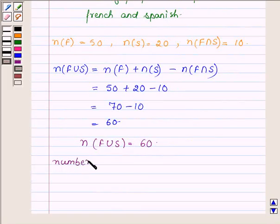Thus, we have n(F union S) is equal to 60.